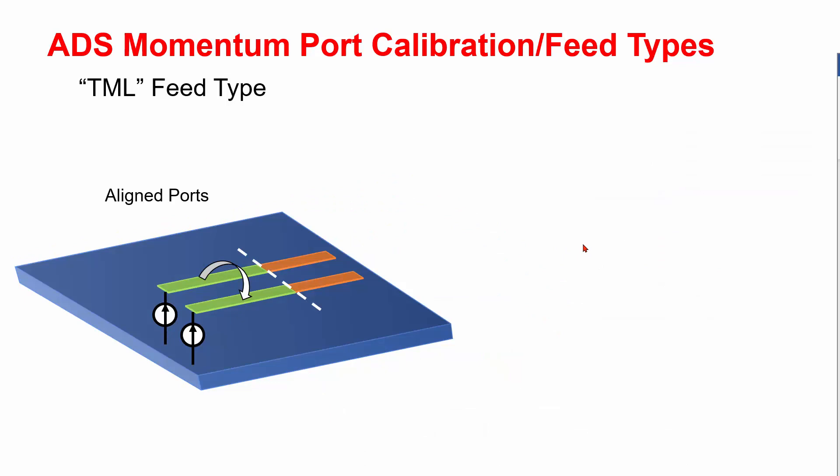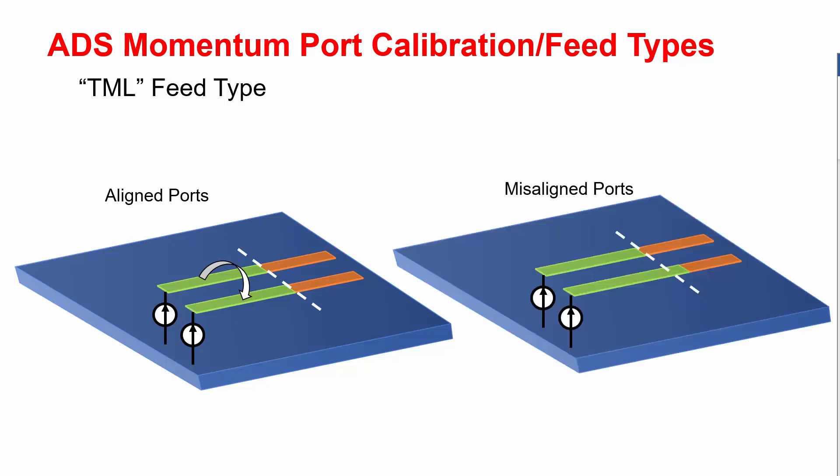When multiple lines where the line ports are set to TML calibration, the mutual coupling between the calibration lines is taken into account when ports are aligned. If ports are not aligned, then the mutual coupling between the calibration lines is turned off.